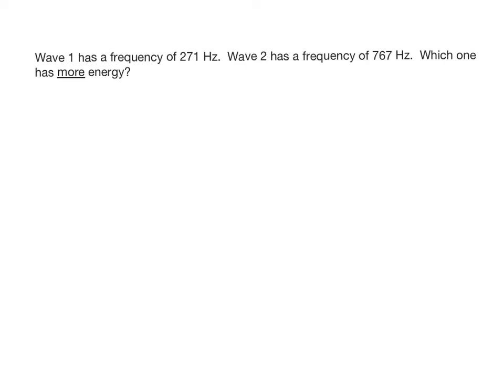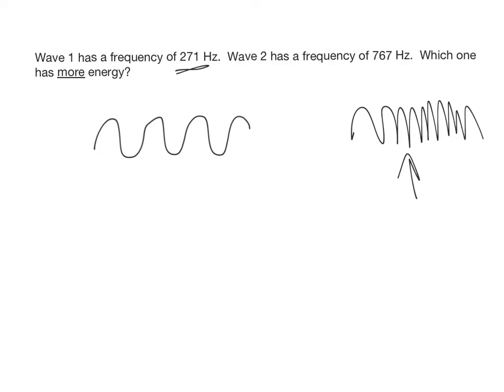Here we're comparing energy and the rule about energy is that energy is directly proportional to frequency. So if this wave has a frequency of 271 and this wave has a frequency of 767, it's higher, it takes more energy to generate the wave at the higher frequency. So the one with more energy is simply going to be the one with a higher frequency, in this case wave two.